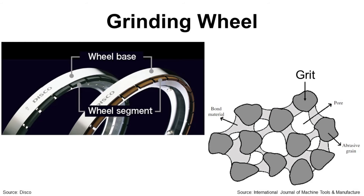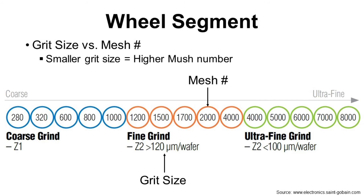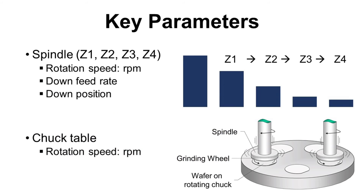Grit size is expressed as a mesh number, and a higher mesh number means a smaller grit size. For coarse grinding, people use a grinding wheel with a low mesh number, meaning a bigger grit size. It can grind more and faster, but with more wafer surface damage. For fine grinding, people use a grinding wheel with a higher mesh number, meaning a smaller grit size. It grinds least and slower, but with the least wafer surface damage.